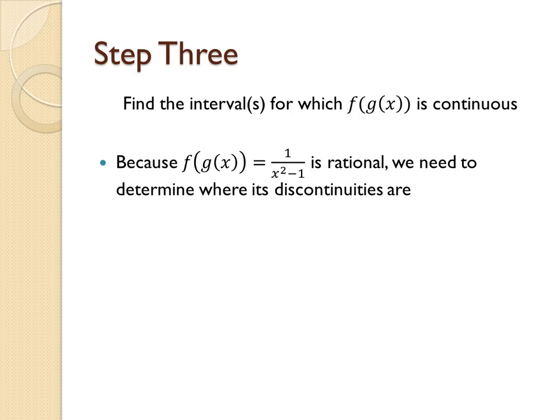For the last step, we need to determine what interval or intervals the composed function is continuous on. Because it is rational, we can do this by looking for its vertical asymptotes. The first thing we need to do is expand the denominator.